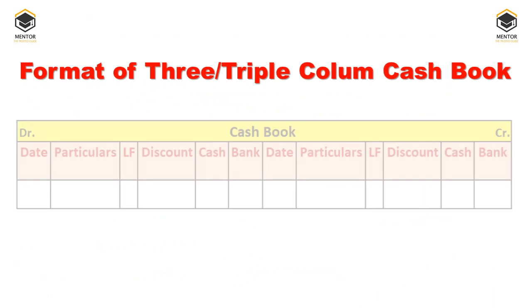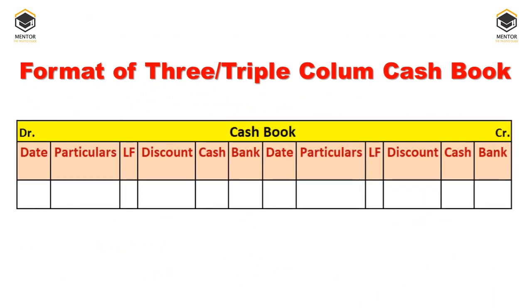The format of the triple column cash book contains: date, particulars, LF, discount, cash, and bank columns — on both the debit side and the credit side. So the cash book has six columns on each side: date, particulars, LF, discount, cash, and bank.